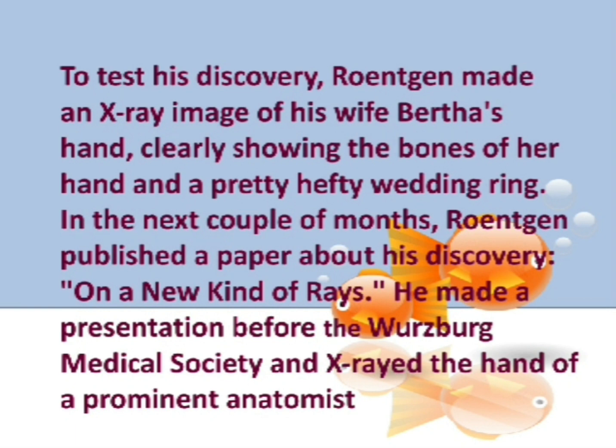From the experiments, Röntgen discovered the presence of an unknown ray which he named X-ray. To test his discovery, Röntgen made an X-ray image of his wife Bertha's hand, clearly showing the bones of her hand and a wedding ring. Later, Röntgen published a paper about his discovery known as 'On a New Kind of Rays.' He also made a presentation before the Würzburg Medical Society and X-rayed the hand of a prominent anatomist.